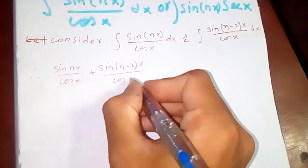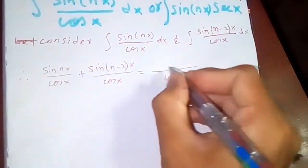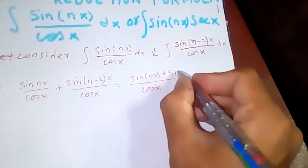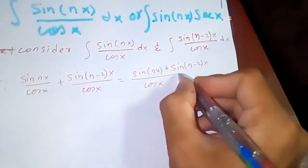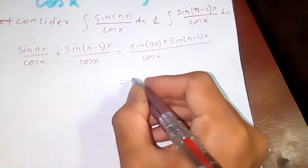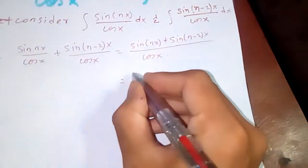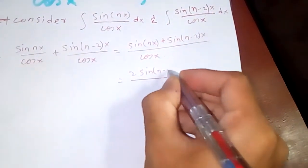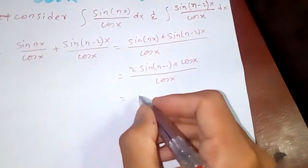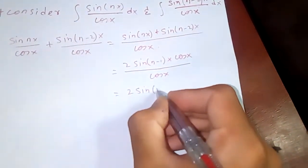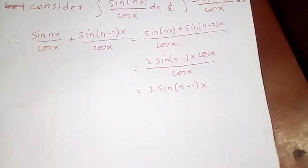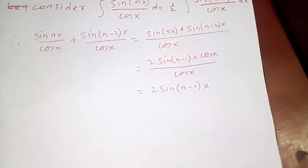Let's evaluate sin^n(x) over cos(x) plus sin^(n-2)(x) over cos(x) first. So sin^n(x) plus sin^(n-2)(x) — using the identity sin A + sin B — if you simplify this you will get 2 sin^(n-1)(x) cos(x) over cos(x), which is nothing but 2 sin^(n-1)(x). So this is easier to integrate now.